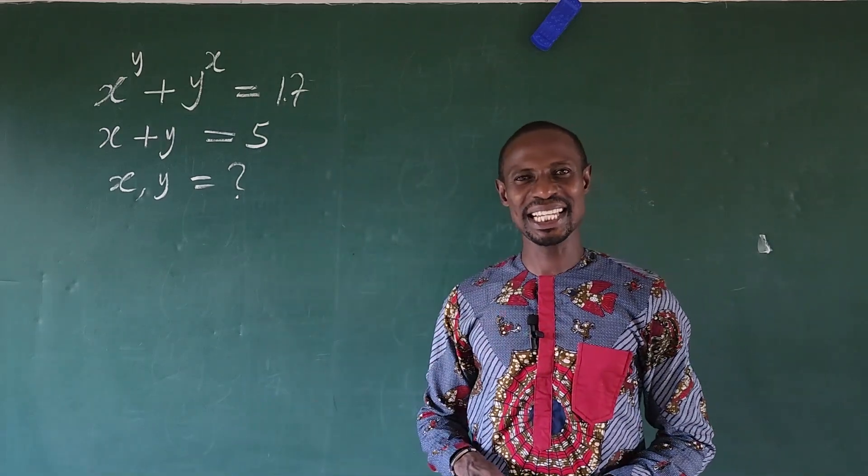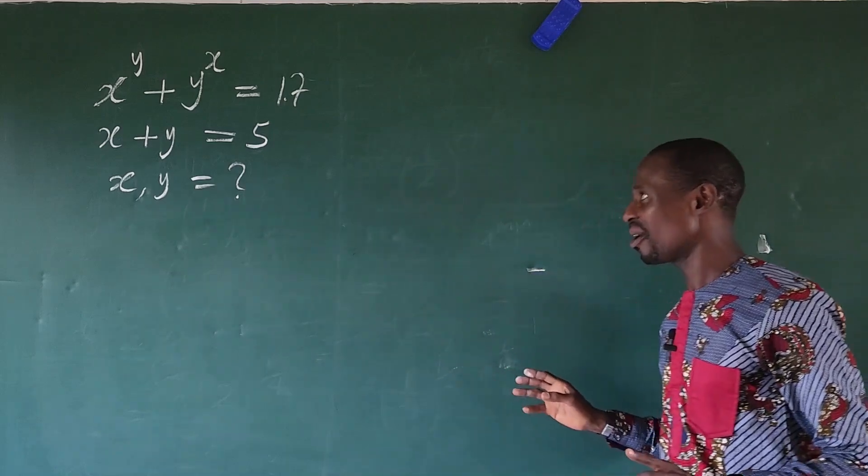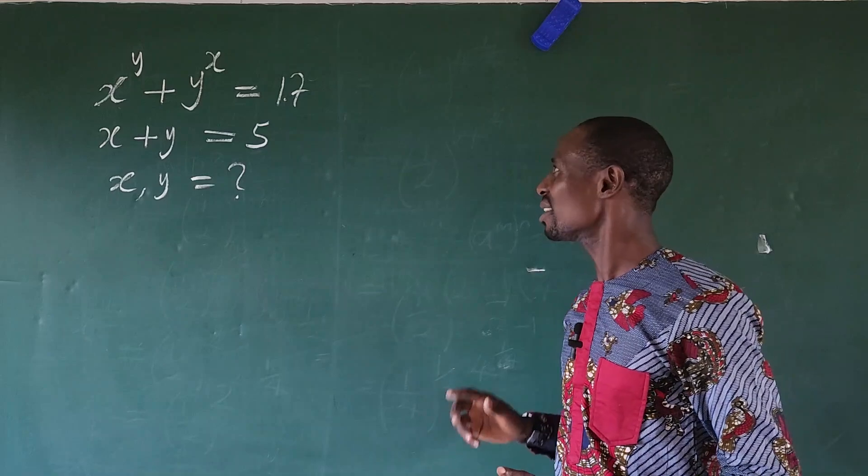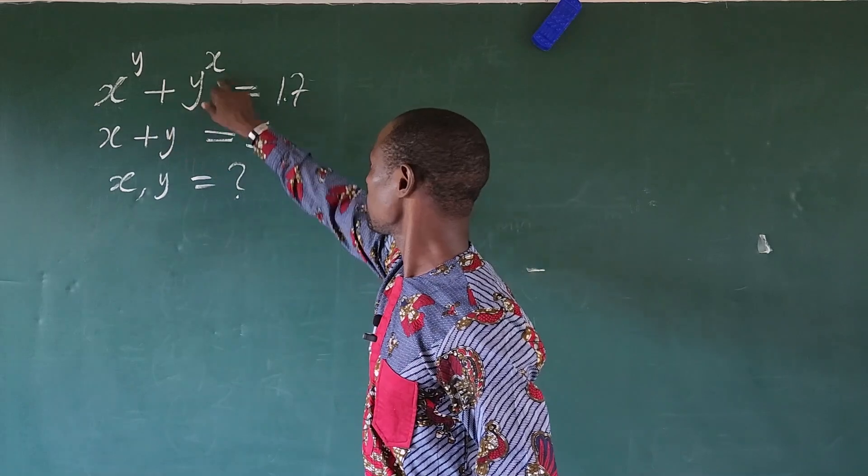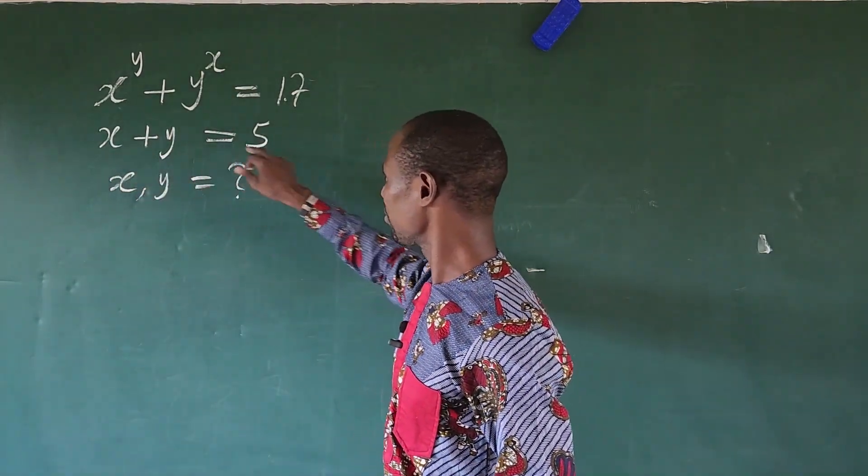here we have a system of simultaneous equations. But this time around, one of the equations is more or less a diverting equation. The question is x to the power of y plus y to the power of x equal to 17 and x plus y equal to 5.